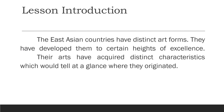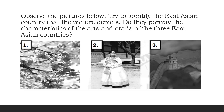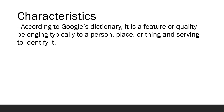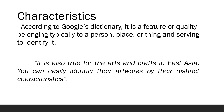Lesson Introduction: The East Asian countries have distinct art forms. They have developed them to certain heights of excellence. Their arts have acquired distinct characteristics which would tell at a glance where they originated. Observe the pictures below and try to identify the East Asian country that the pictures depict. According to the dictionary, a characteristic is a feature or quality belonging typically to a person, place, or thing serving to identify it. You can easily identify artworks by their distinct characteristics.